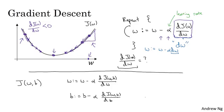As an aside, I just want to mention one notational convention in calculus that is a bit confusing to some people. I don't think it's super important that you understand calculus, but in case you see this, I want to make sure that you don't think too much of this, which is that in calculus, this term here, we actually write as follows, with that funny squiggle symbol. So this symbol, this is actually just a lowercase d in a fancy font, in a stylized font. But when you see this expression, all this means is this is the derivative of J(w,b), or really the slope of the function J(w,b), how much that function slopes in the w direction. The rule of the notation in calculus is that if J is a function of two or more variables, then instead of using lowercase d, you use this funny symbol. This is called a partial derivative symbol.